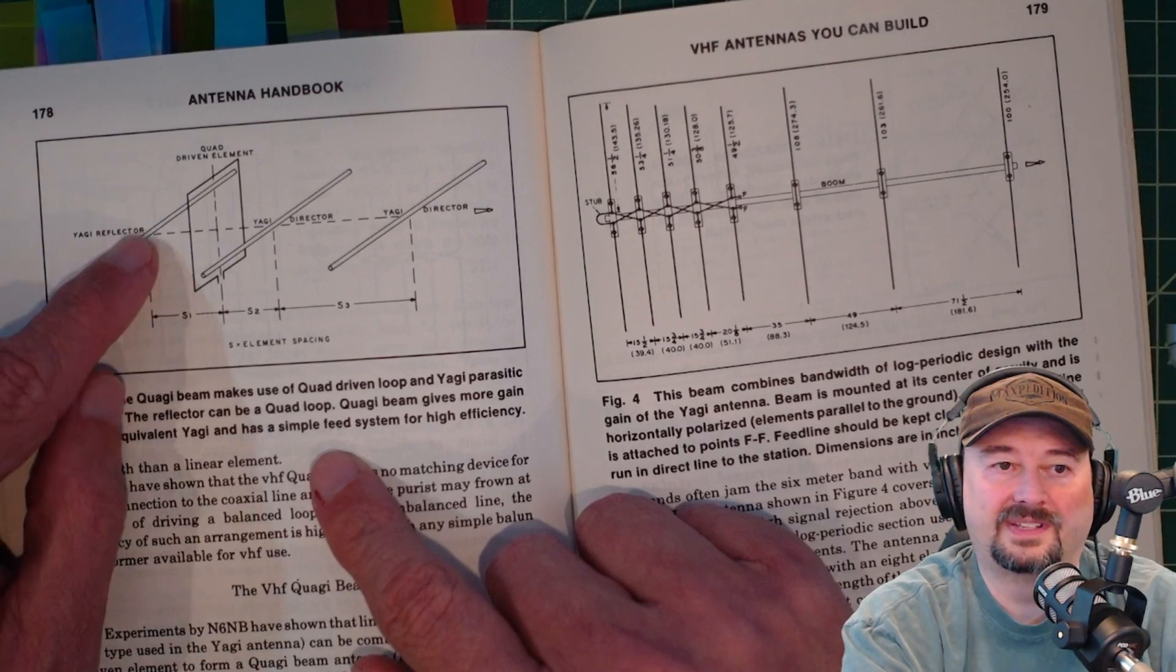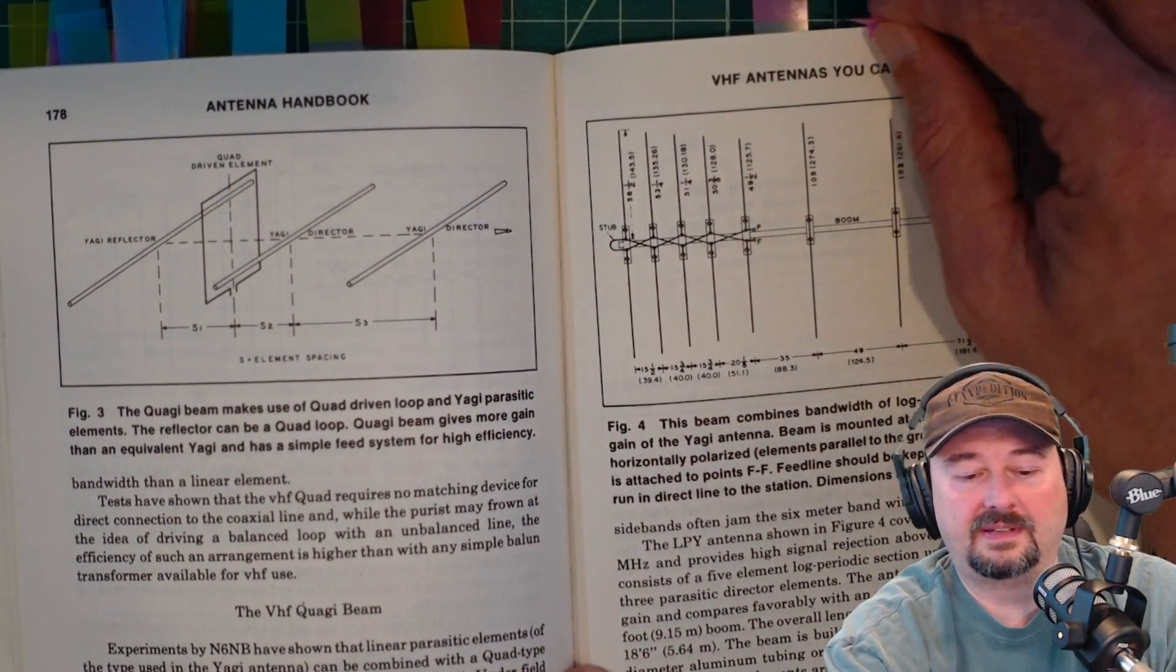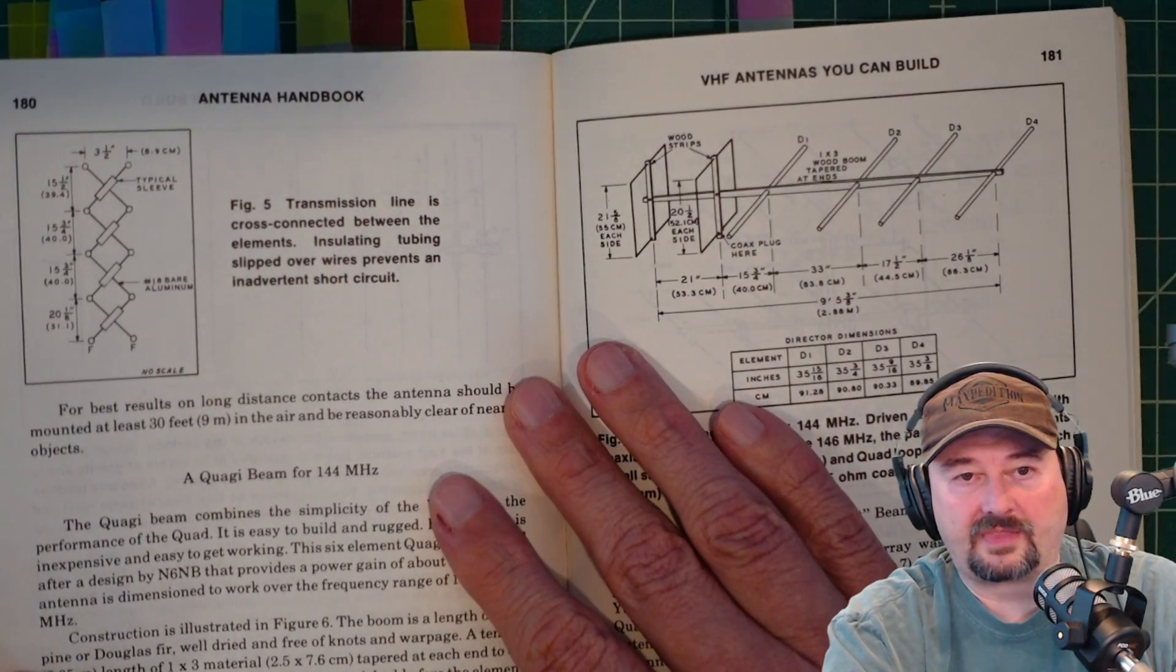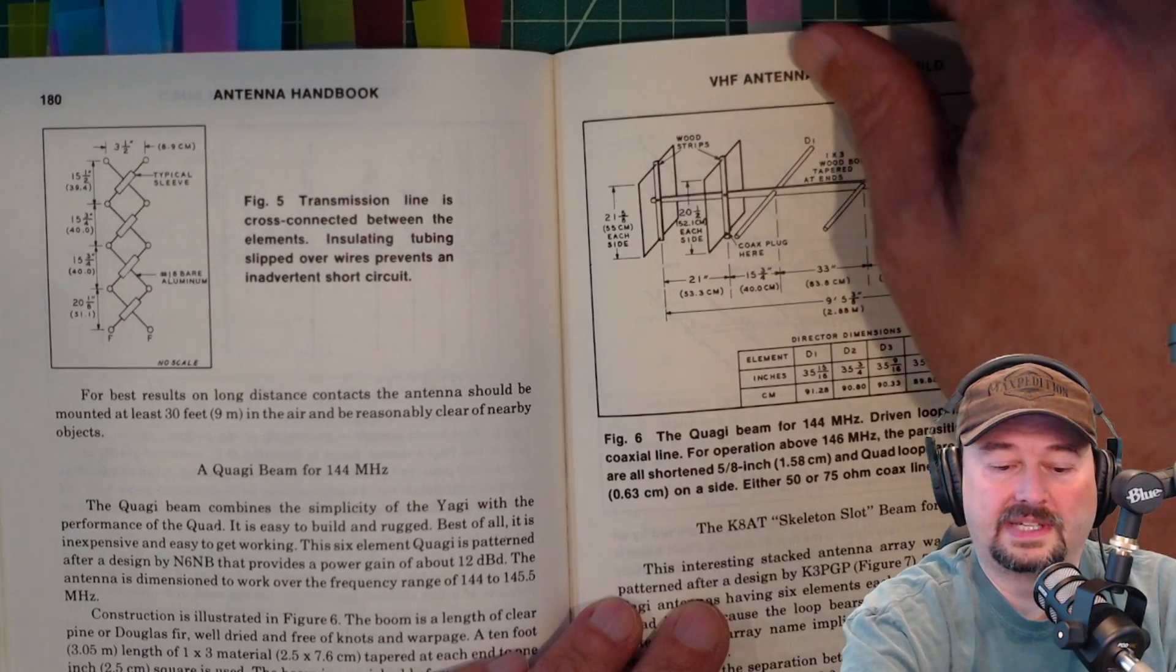For building the quad G. I don't even know how you say that, but it's got a quad loop in here and directors and reflectors. So, it's pretty interesting stuff, all these different antennas that you can build. And I guess you could really get your VHF signals out doing this.